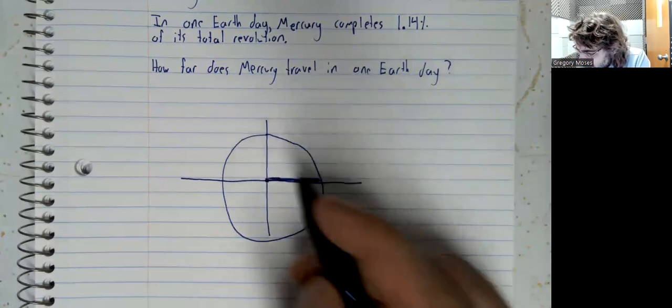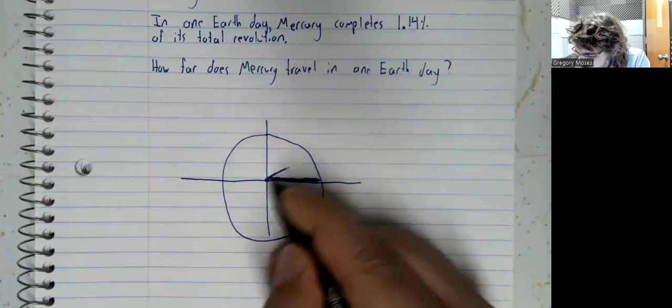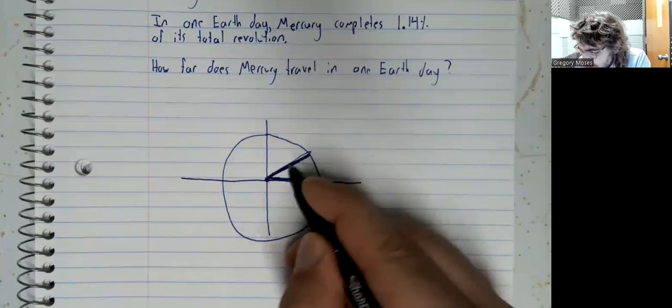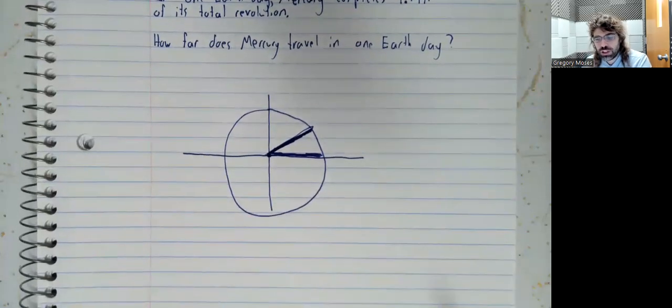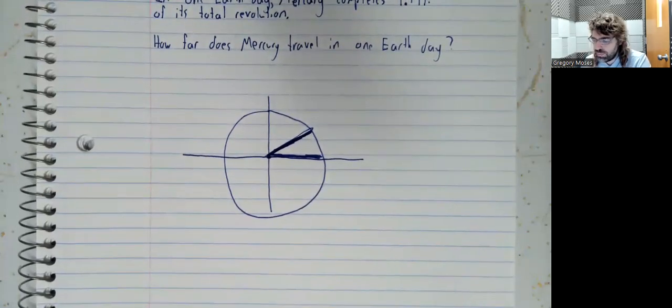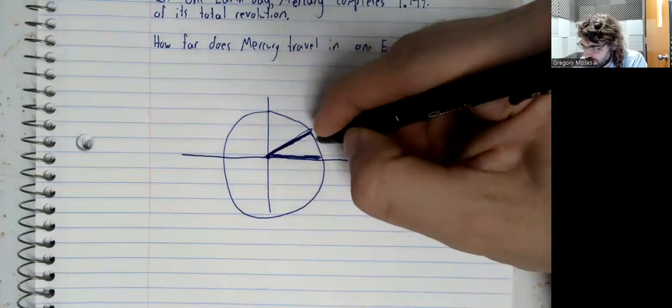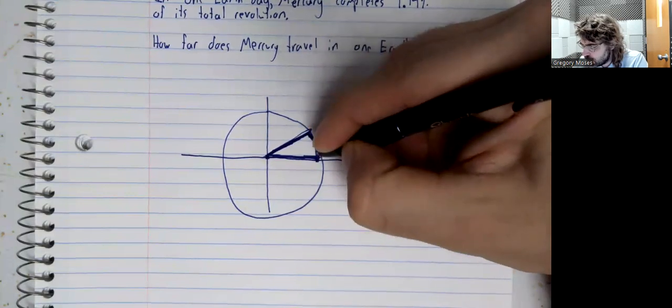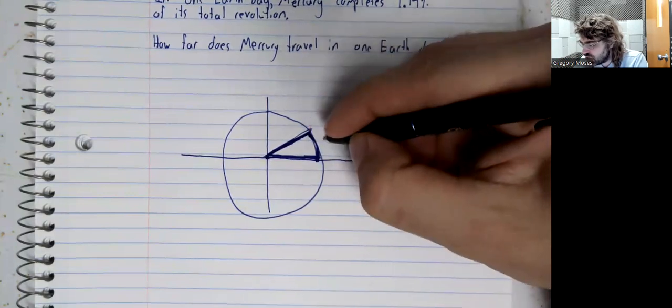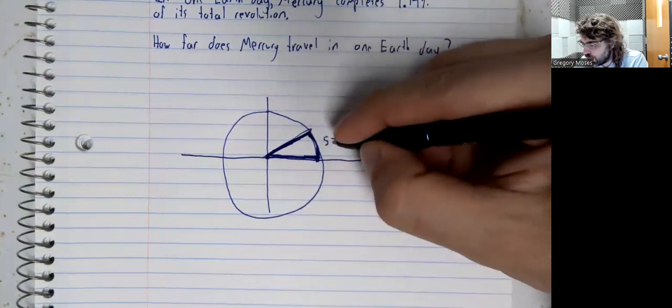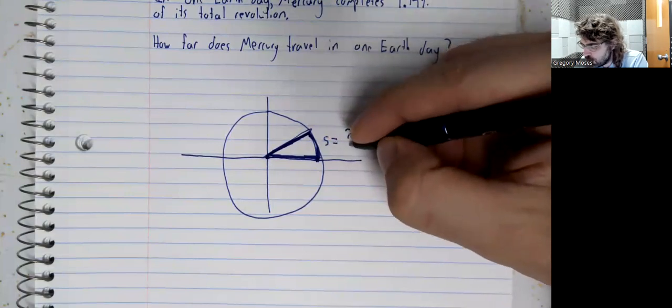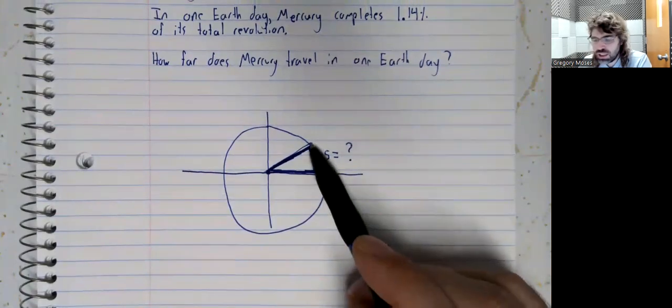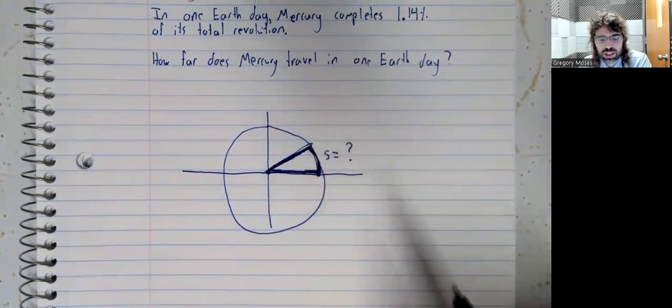So we start here. And this is very much not to scale. But Mercury goes around the sun and ends up there. And this is what we want to know. How far Mercury travels is this arc length.